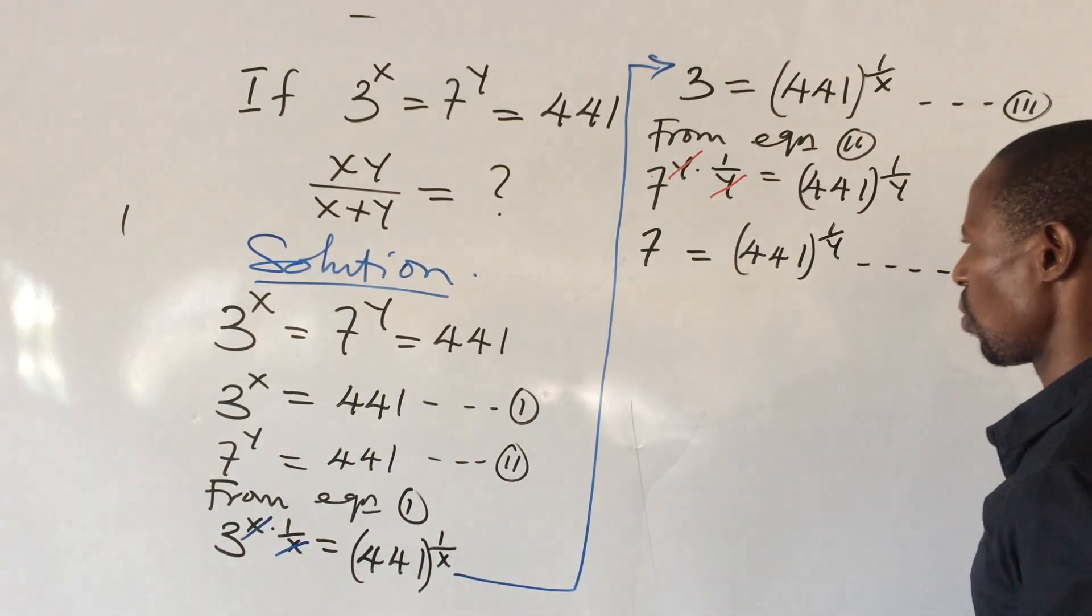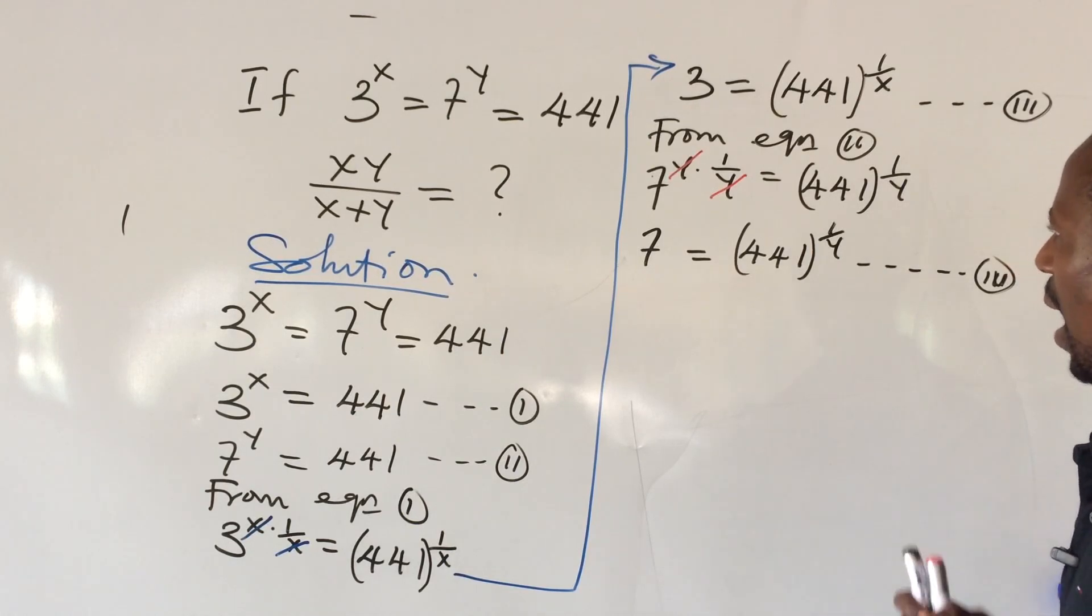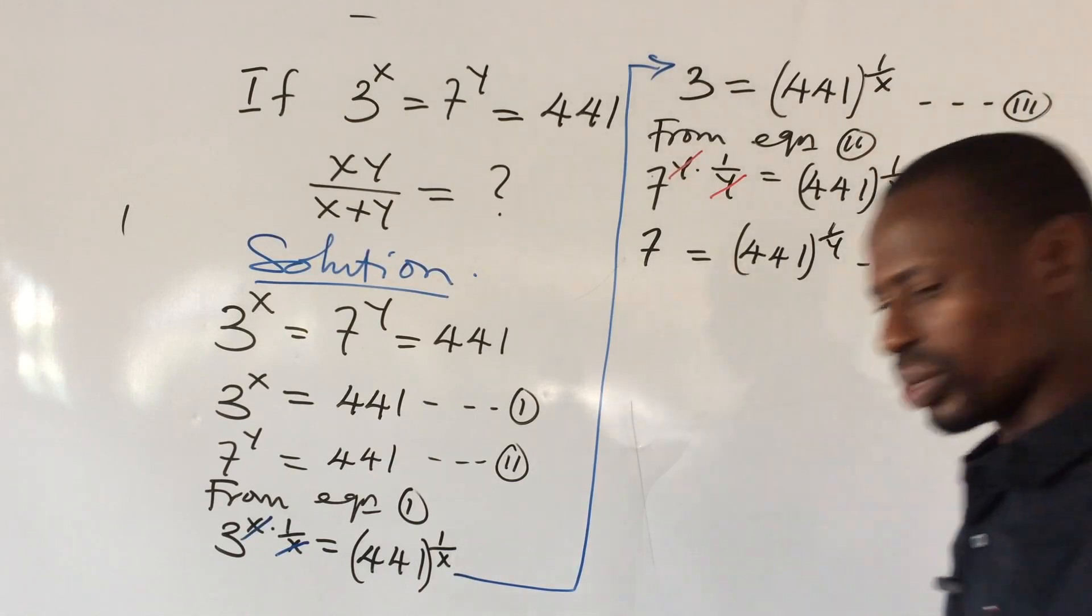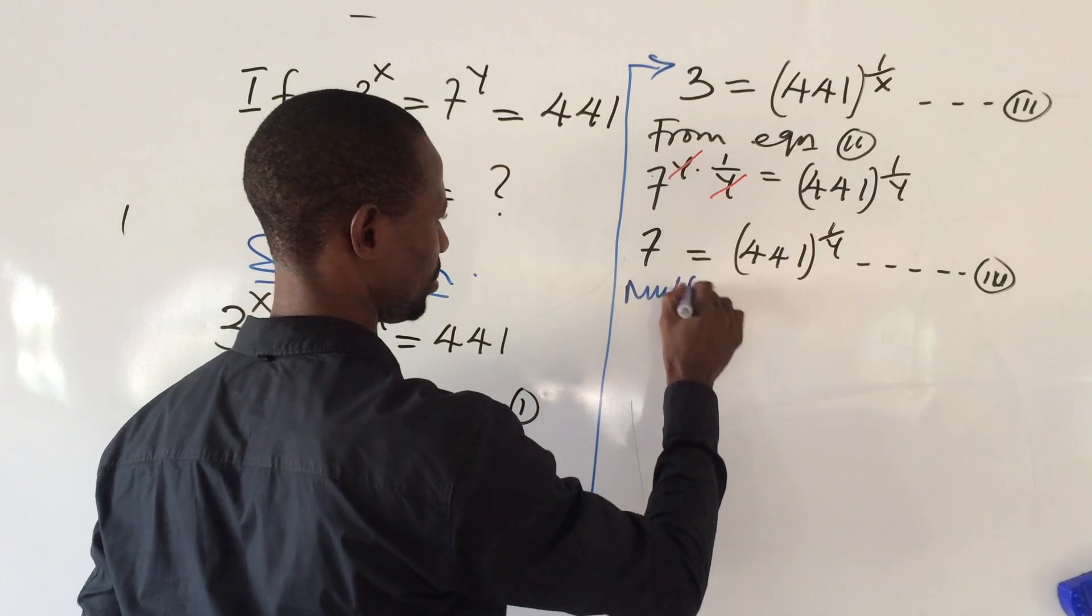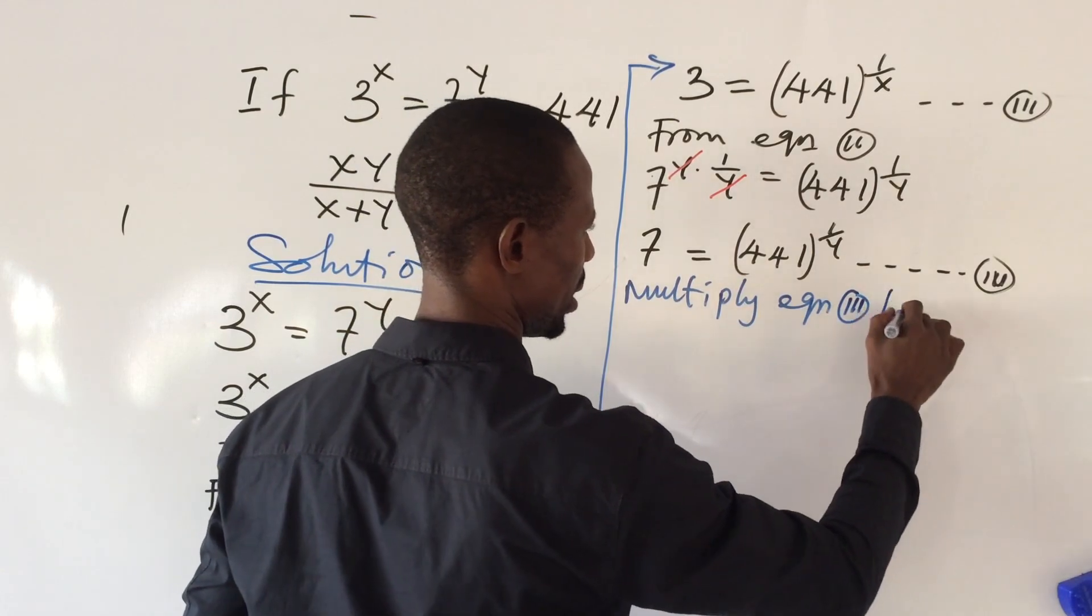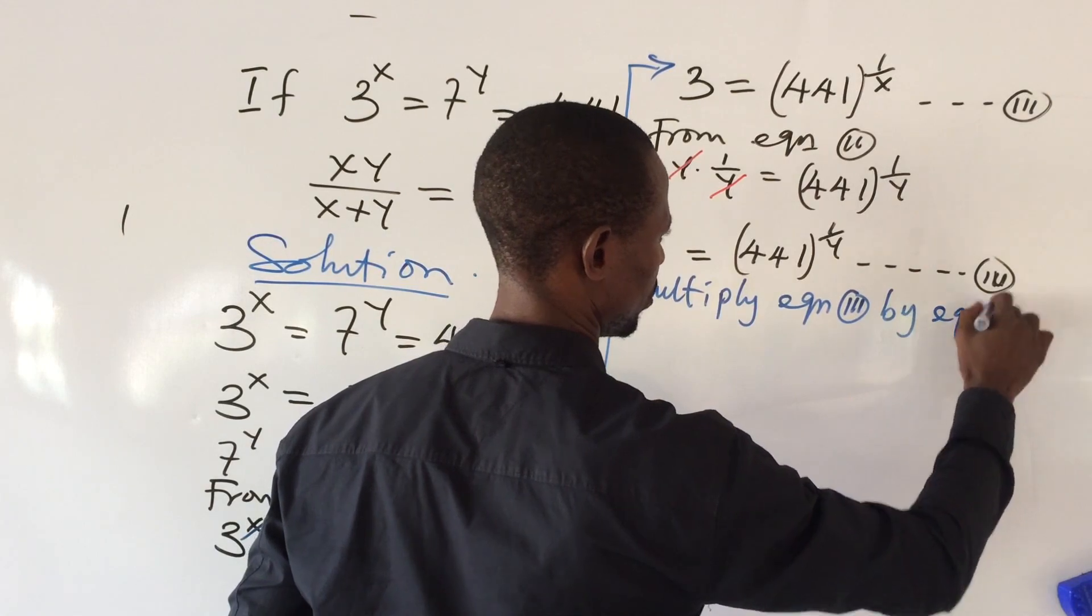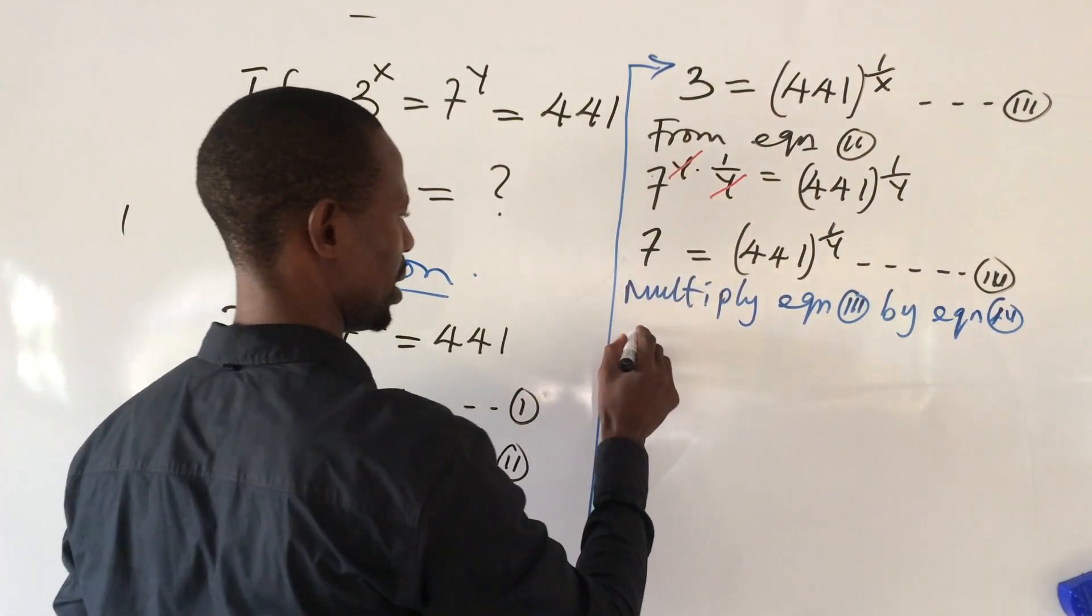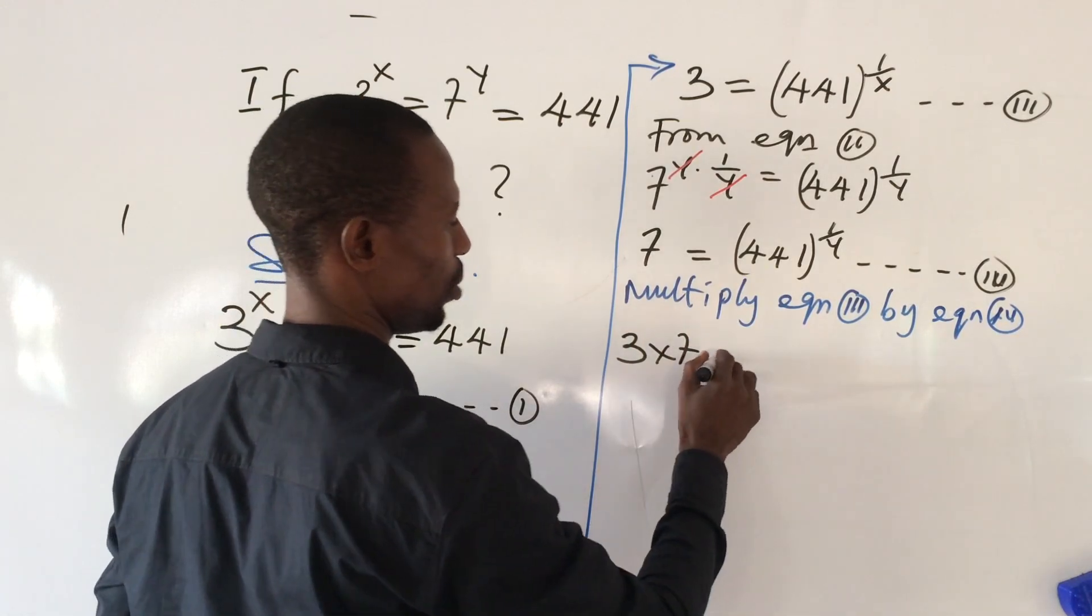Now let's take a look at equation 3 and equation 4. What if I decide to multiply equation 3 and equation 4? What would that give us? So let's put it down in writing. Here we have to multiply equation 3 by equation 4.